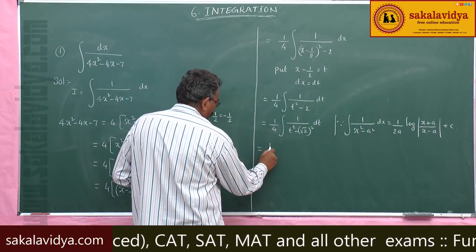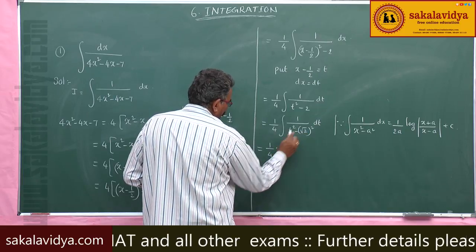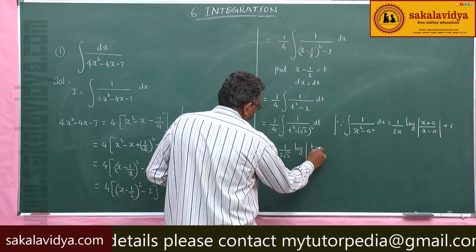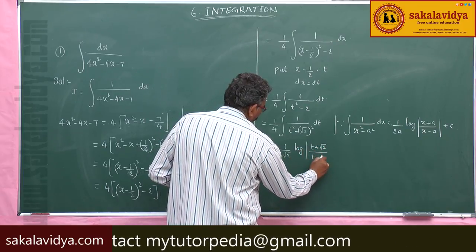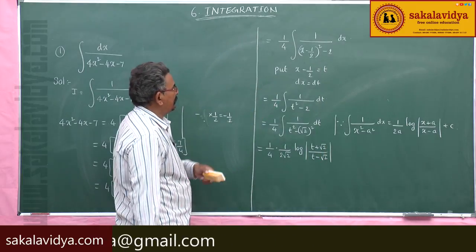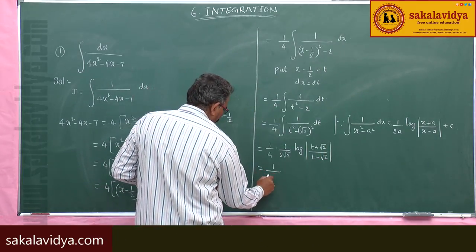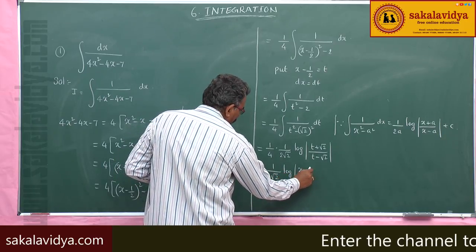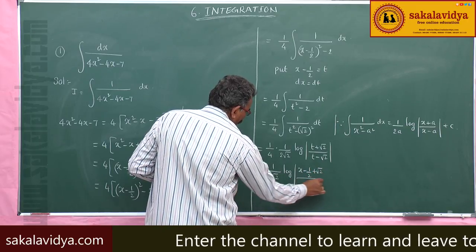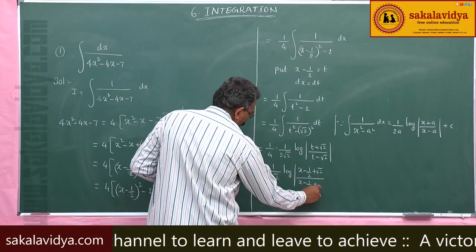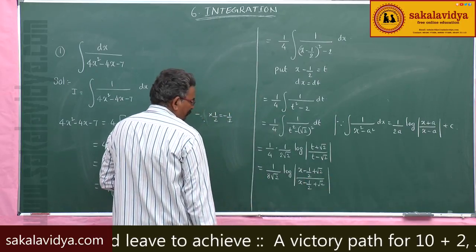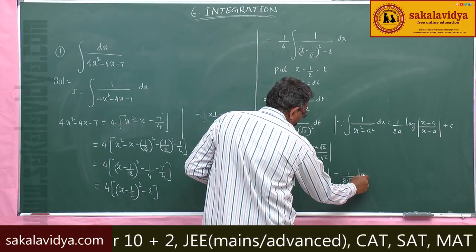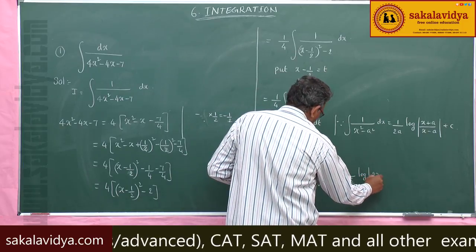Applying the formula, we get (1/4)×(1/(2a))log|(t+√2)/(t-√2)|, where a = √2. Substituting back t = x-1/2, this gives (1/(8√2))log|(x-1/2+√2)/(x-1/2-√2)|. Taking LCM in numerator and denominator gives (1/(8√2))log|(2x-1+2√2)/(2x-1-2√2)|.